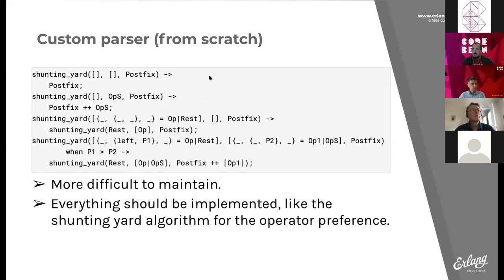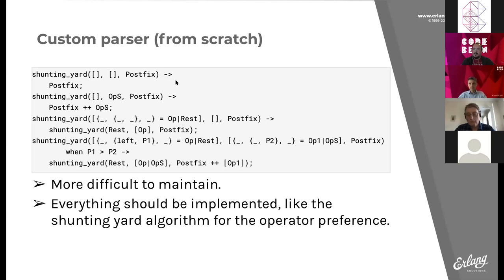Another difficulty was the shunting-yard algorithm — the algorithm for solving arithmetic expressions like '1 + 2' and recognizing that multiplication has higher priority than addition. I had to develop it myself; I copied it from elsewhere but had to adapt it to the specific process I was implementing. That was one of the main difficulties I found doing the parser by myself.